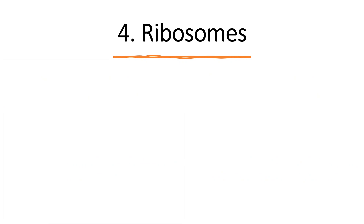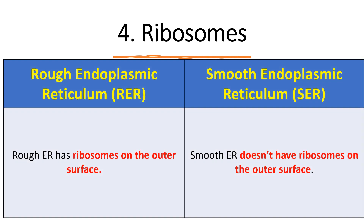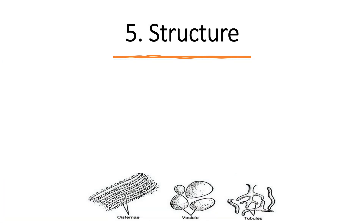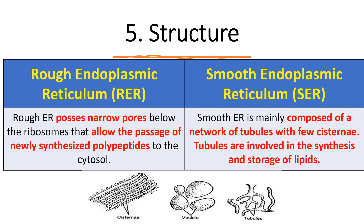The fourth major difference is their ribosomes. Rough endoplasmic reticulum has ribosomes, so it is involved in protein synthesis. Smooth endoplasmic reticulum does not have ribosomes on its outer surface, so it normally does not synthesize proteins. Rough ER possesses narrow pores below the ribosomes, which allow the passage of newly synthesized polypeptides to the cytosol.